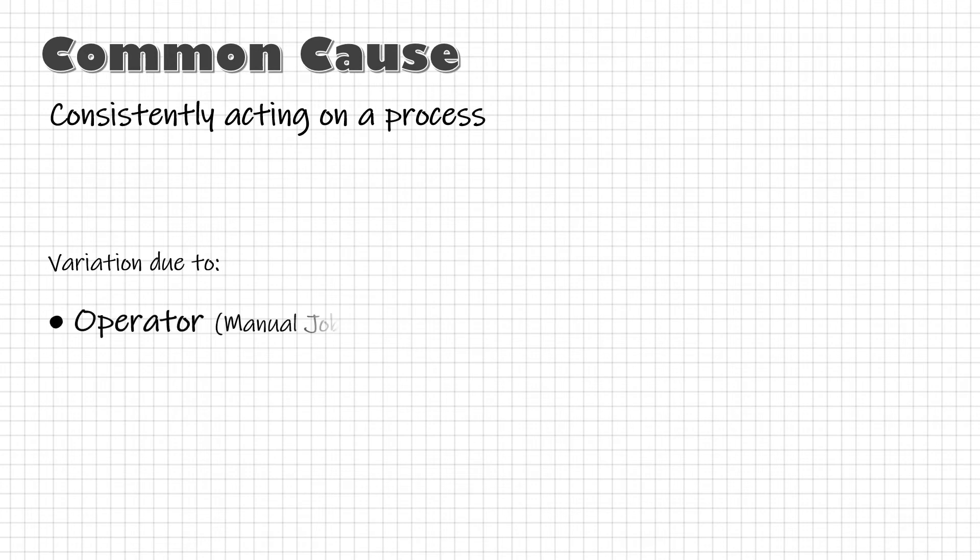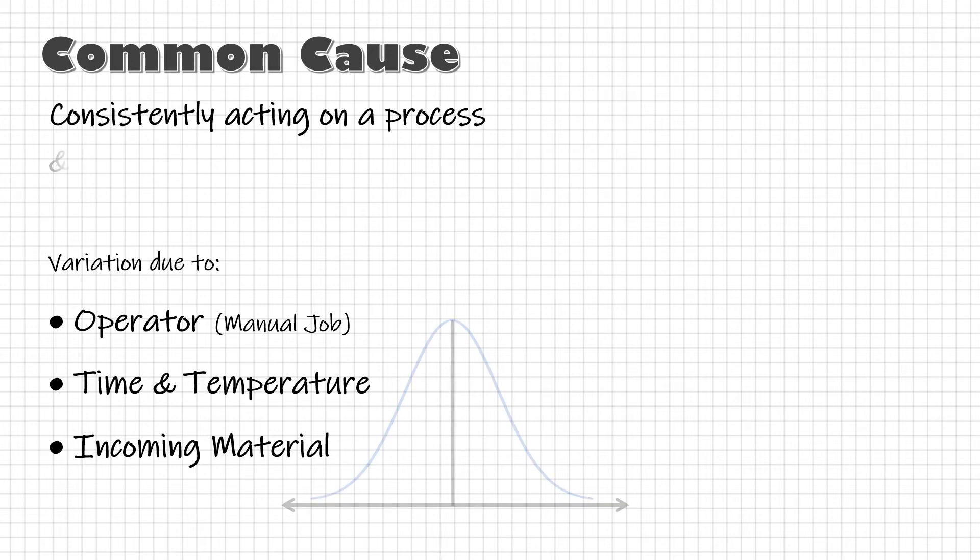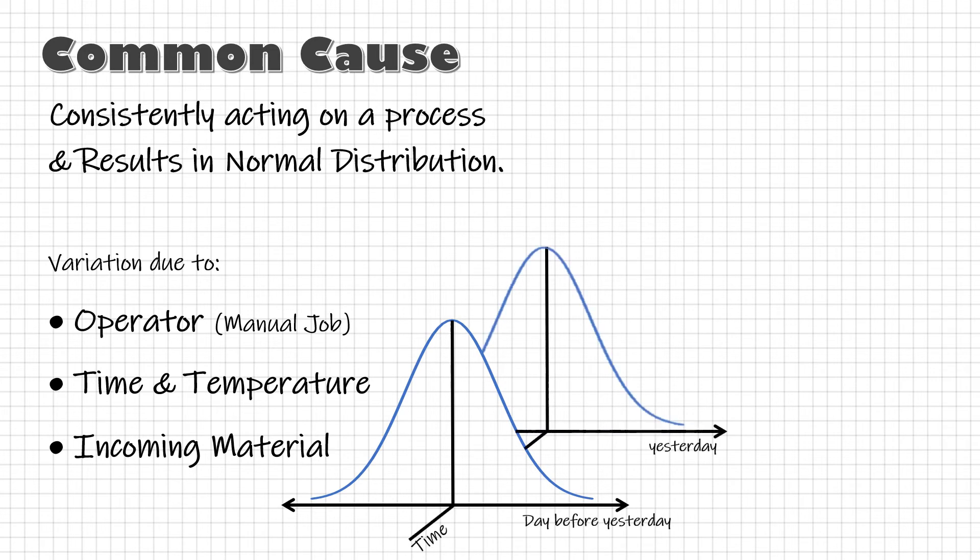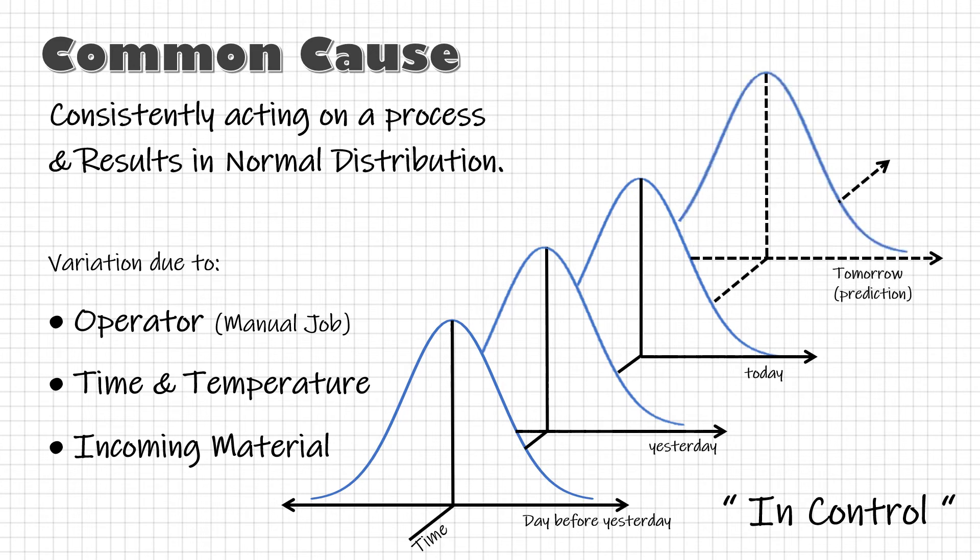Common causes are those sources of variation that are consistently acting on a process. For example, variation may happen during manual processing of the parts or due to day-to-day temperature difference, variation in incoming material. These common causes produce a stable and repeatable distribution over time. And the concerned process is called in state of statistical control, or we can simply say in control. And it is predictable. A process must be in control if we want to apply SPC.